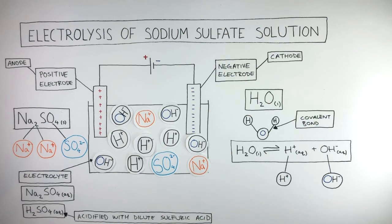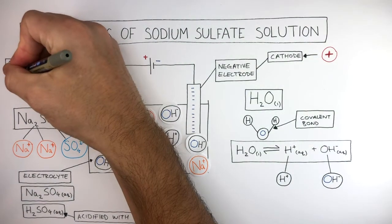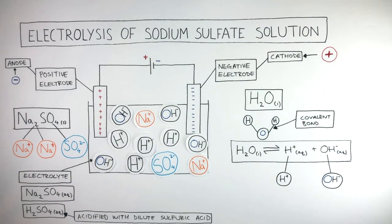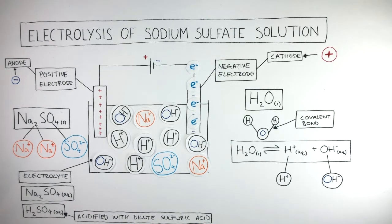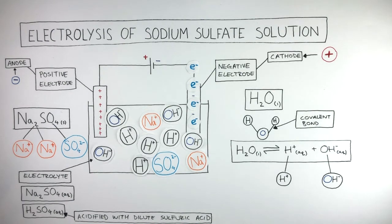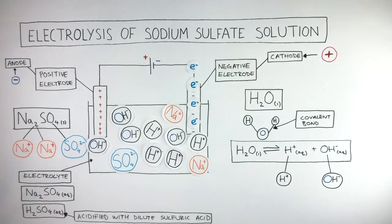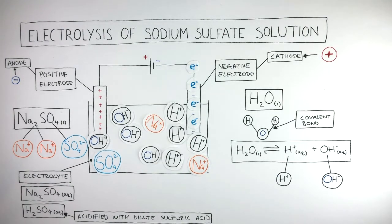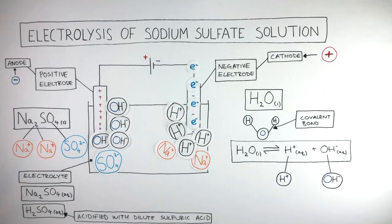We're now going to go through what happens at the electrodes, and you need to remember cations are attracted to the cathode and anions are attracted to the anode. The electrons flow from the negative terminal in the power pack to the negative electrode called the cathode. The ions are free to move in the solution — the positive cations are attracted towards the cathode and the negative anions are attracted towards the anode.